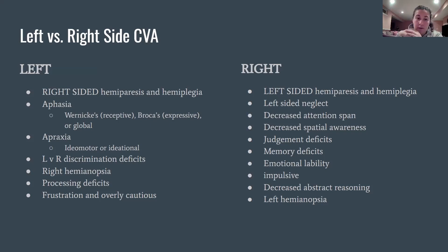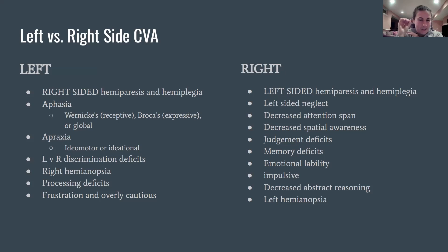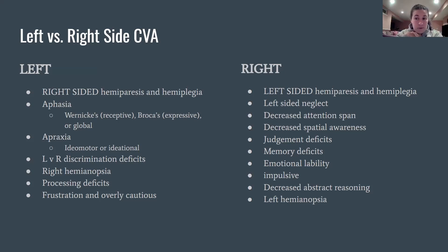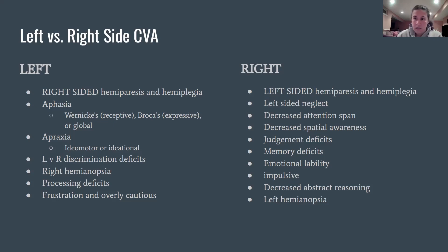Global aphasia means both Wernicke's and Broca's areas are affected. Left-sided stroke patients could also have apraxia — difficulty with motor planning, either ideomotor or ideational apraxia. For example, if I tell a patient to brush their teeth, they just stare blankly. But if I break it into steps — pick up the toothbrush, grab the toothpaste, squeeze the toothpaste — they can do each step. They just can't plan the whole sequence together.